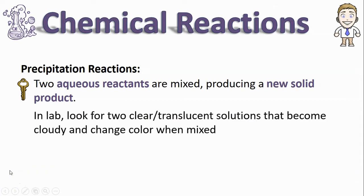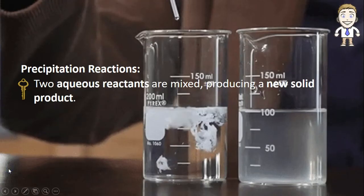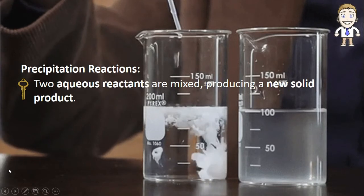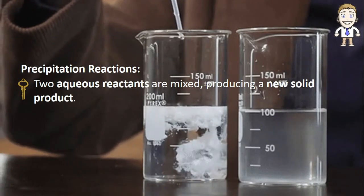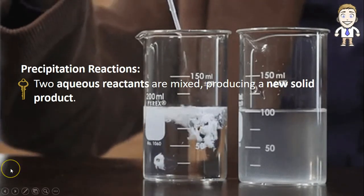When you're doing these reactions in lab, you can look for two clear or translucent solutions—that means you can see through them—and when you mix them they become cloudy and change color since you're forming that new solid product. Here you can see the white cloud being formed in the solution; that's our new solid product. This is a precipitation reaction.